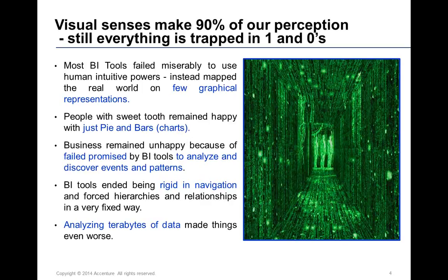Even though visual senses make up 90% of our perception, we still largely use representations that are not intuitive enough for a visual brain. Examples like pie charts and bar charts have been traditionally used in the business intelligence world, but we all know they start failing at a point to represent data in a more accurate way. Most BI tools have also failed to give the ability to do discovery or detect patterns. There is a huge amount of rigidity where you have to define fixed hierarchies, and you cannot jump between them. It's far more complex to really discover data, especially when data sizes are growing to terabytes and petabytes.